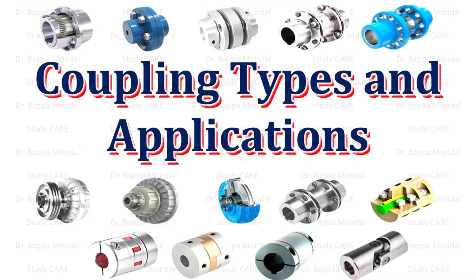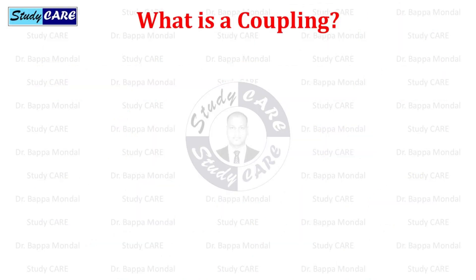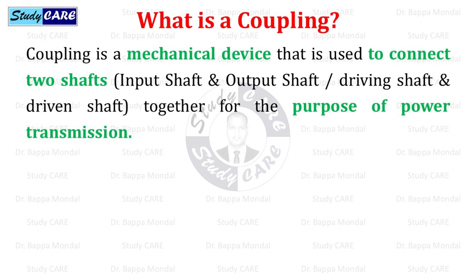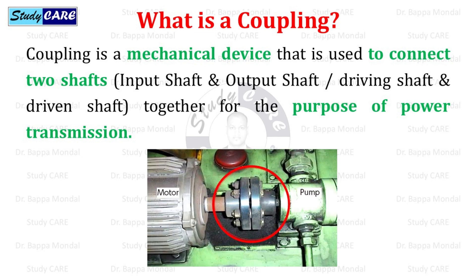In this video, we will discuss different types of coupling and their applications. A coupling is a mechanical device that is used to connect two shafts together for the purpose of power transmission. Those shafts are called input shaft and output shaft, or driving shaft and driven shaft.